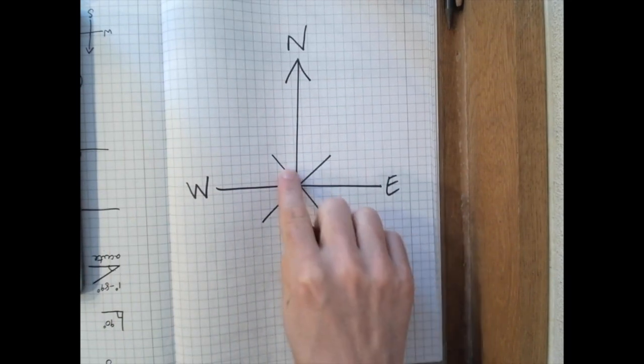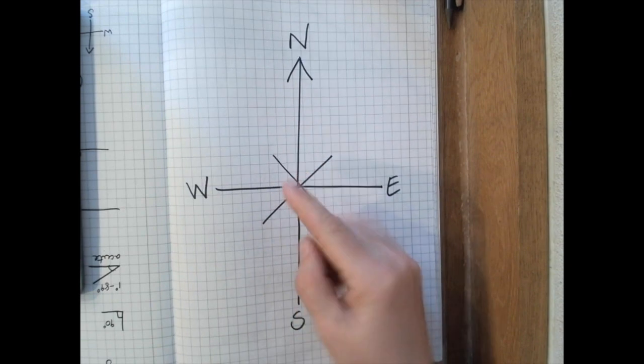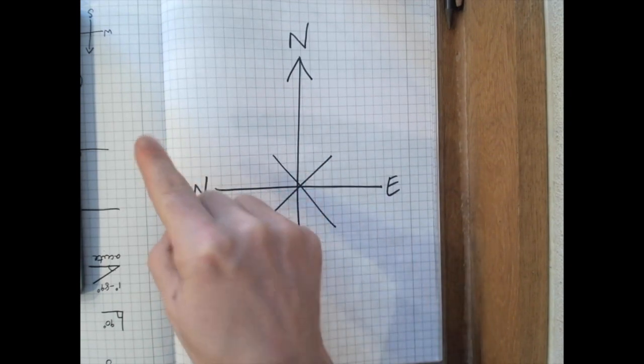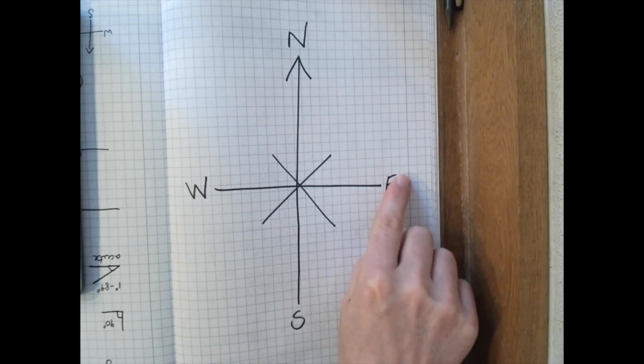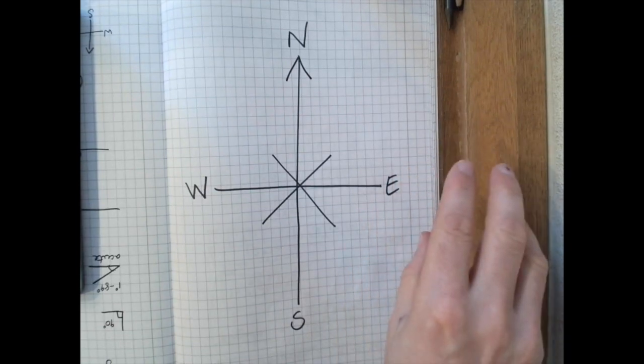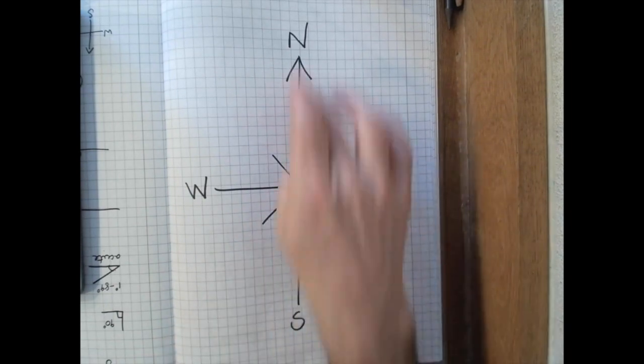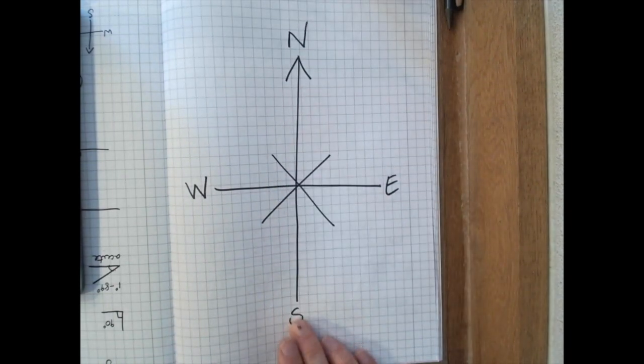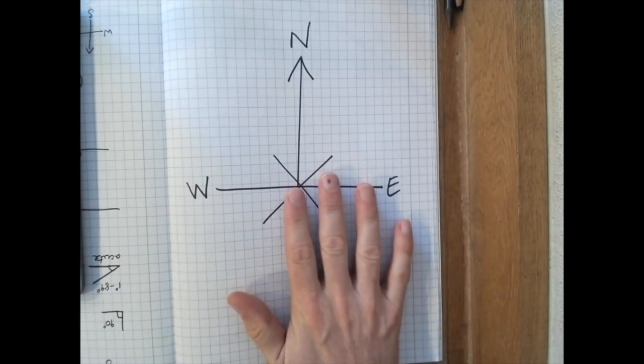If we think about a map with Britain or England in the middle here, this way to the west would be America over the sea. This way to the east would be Europe, then Russia, China, etc. To the north would be the North Pole. To the south would be Antarctica and the South Pole. That's how a compass works.